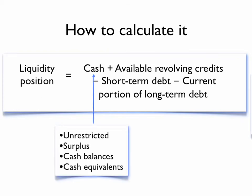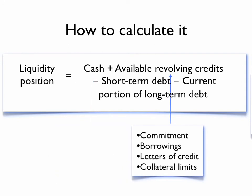Cash is unrestricted cash balances not used in the company's operations, plus near-cash short-term investments. Available revolving credits are the maximum amount of the line, often called the commitment, less any debt outstanding under the line, less any letters of credit issued under the line, less any limits on borrowing caused by collateral requirements.